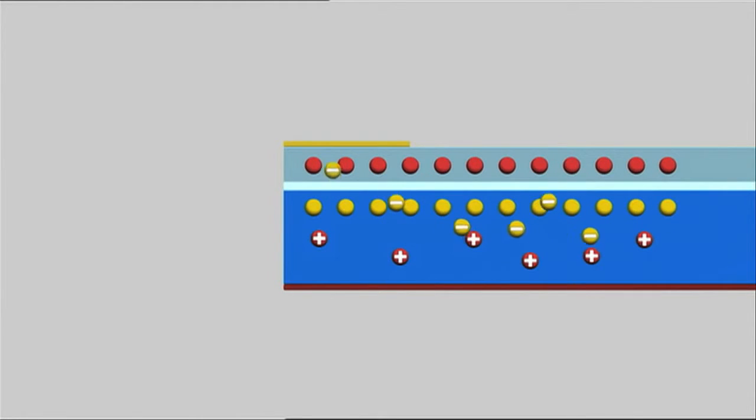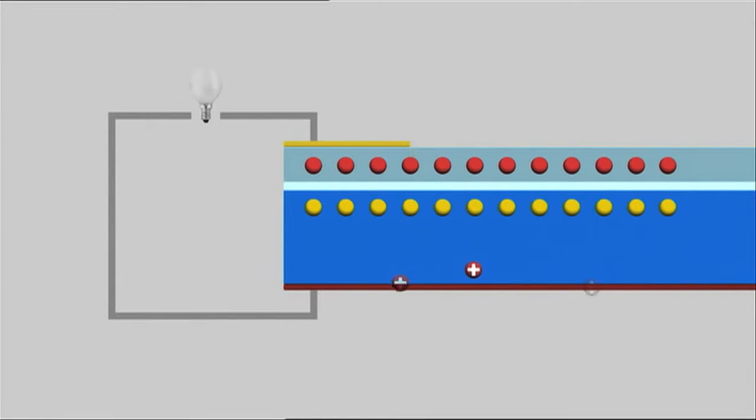At the interface between positive and negative charge layers, the free charge carriers created by the light are released. This generates an electric current.